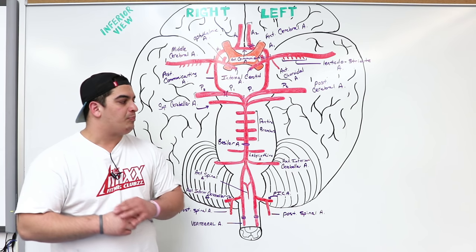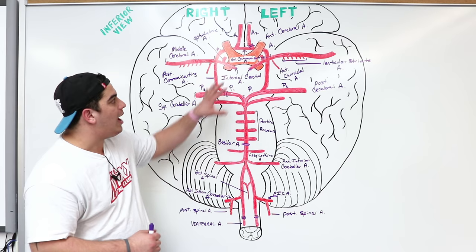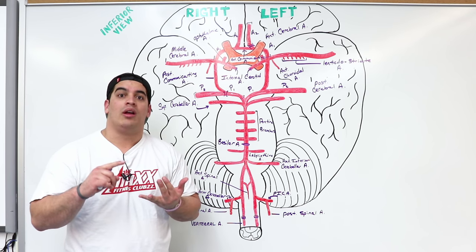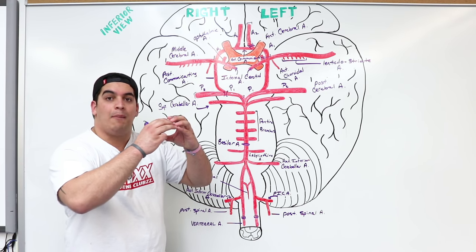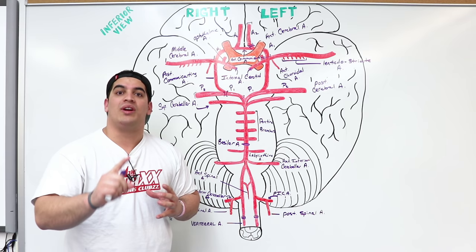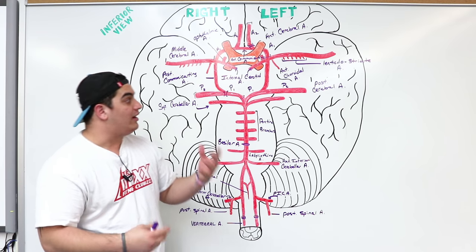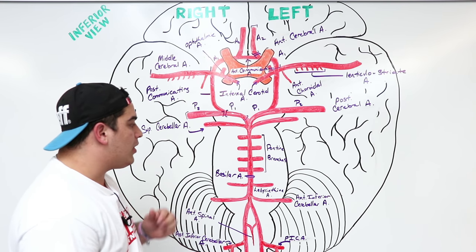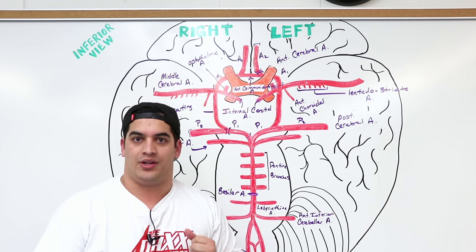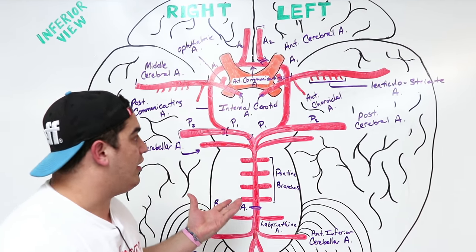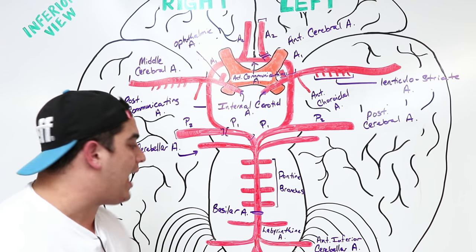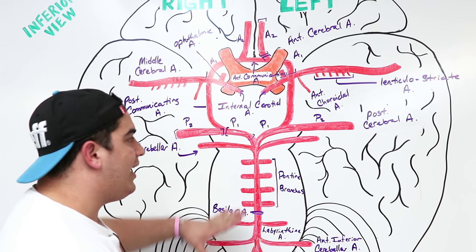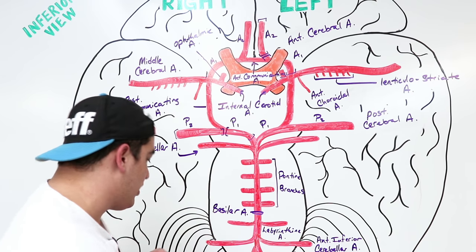We're also going to talk about situations which are more common within certain vessels in the circle of Willis — maybe due to chronic hypertension or connective tissue disorders — where those vessels can balloon out and become extremely dilated, with the risk of rupturing and leading to a subarachnoid hemorrhage. It's good to know your anatomy and blood flow of the brain, but it's even more important to understand what happens if these vessels are affected. We'll hit the most important ones.